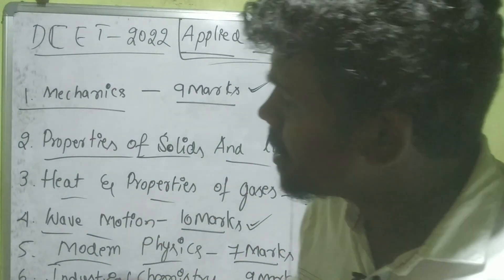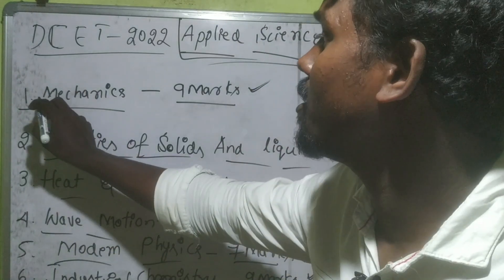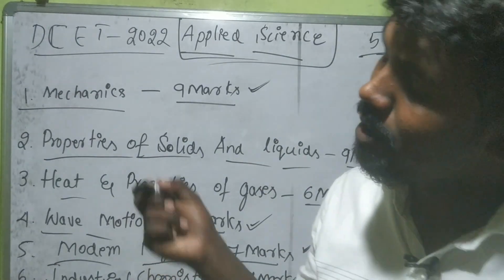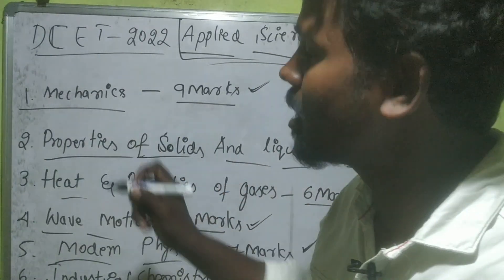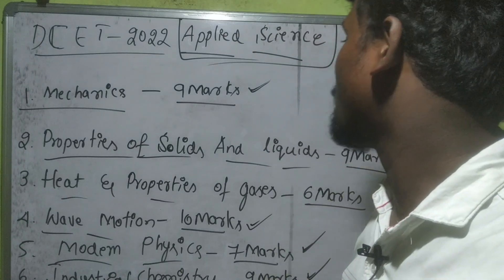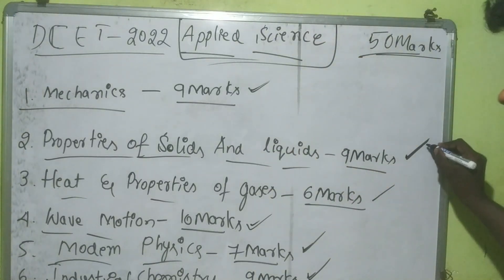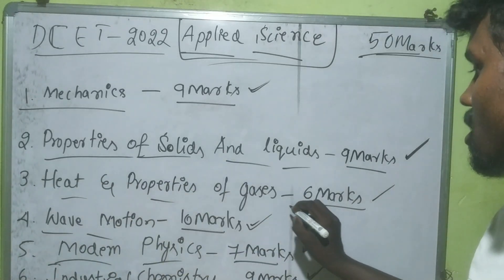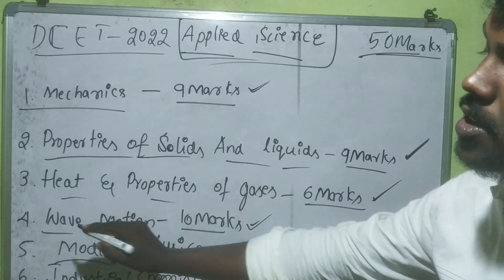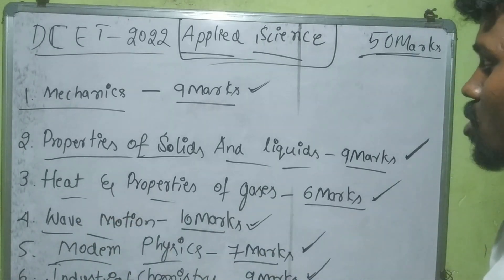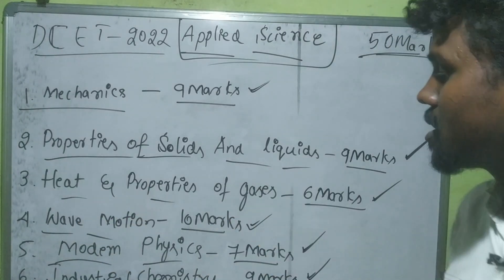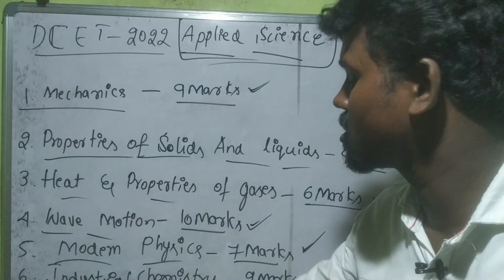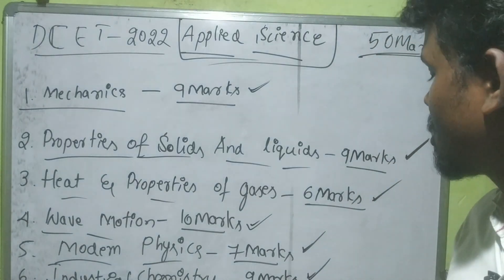The first unit is mechanics, which has 9 marks. The next unit is properties of solids and liquids. The next unit is heat and properties of gas. The next unit is wave motion, which carries 10 marks. The next unit is modern physics, followed by industrial chemistry.